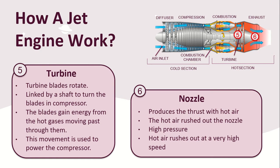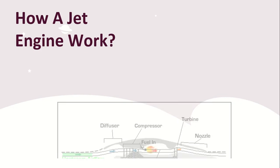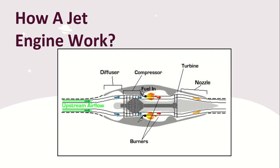The nozzle may process a mixture which combines the high-temperature air coming from the engine core with the lower-temperature air that was bypassed. At the end, the hot air rushes out of the nozzle at very high speed. From the figure, we can tell that the synchronized operation of the compressor, combustion chamber, and turbine makes the aircraft move forward.